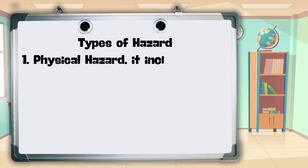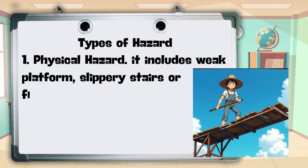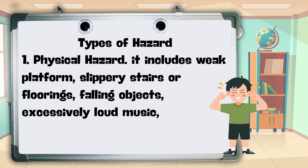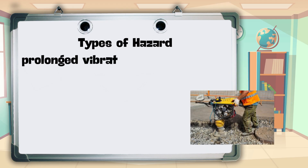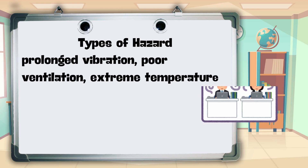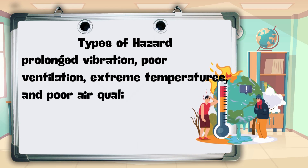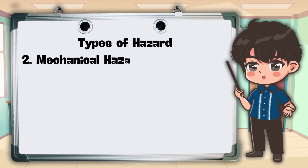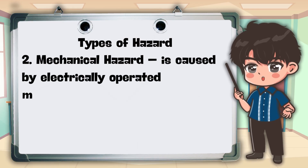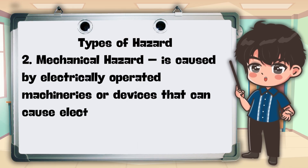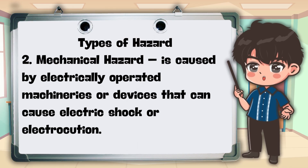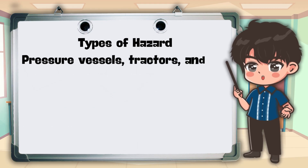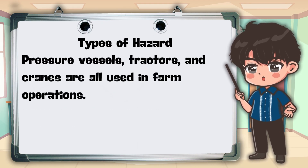Here are the types of hazard. 1. Physical hazard — It includes weak platforms, slippery stairs or flooring, falling objects, excessively loud noise, prolonged vibration, poor ventilation, extreme temperatures, and poor air quality. 2. Mechanical hazard — It is caused by electrically operated machineries or devices that can cause electric shock or electrocution. Pressure vessels, tractors, and cranes are all used in farm operations.